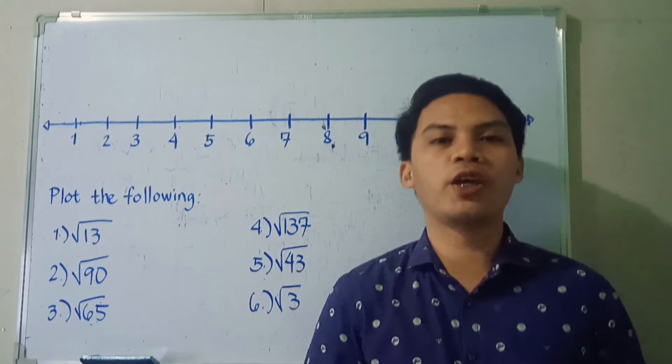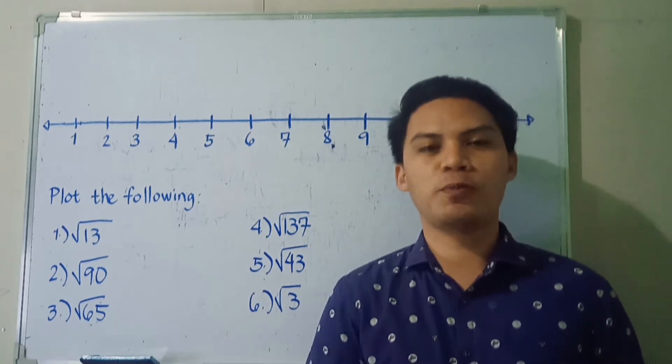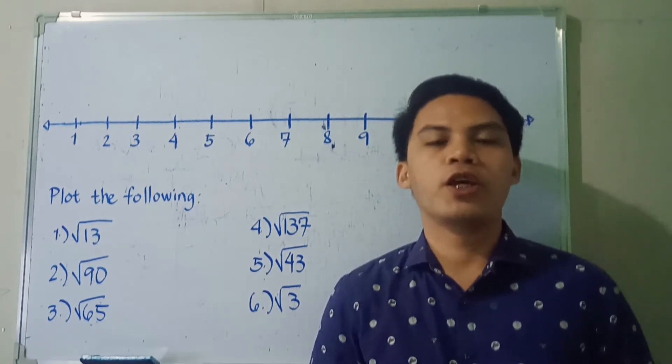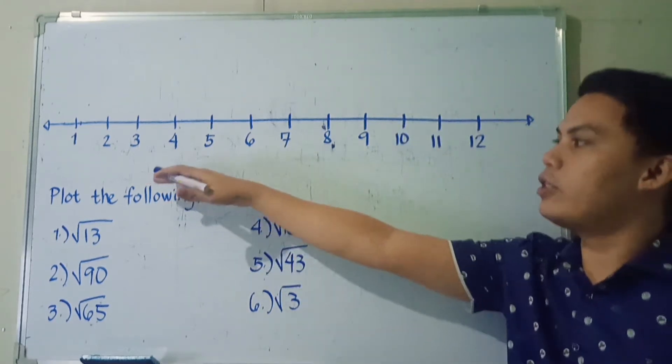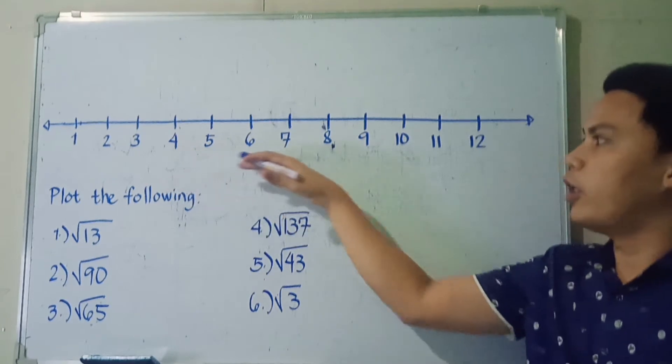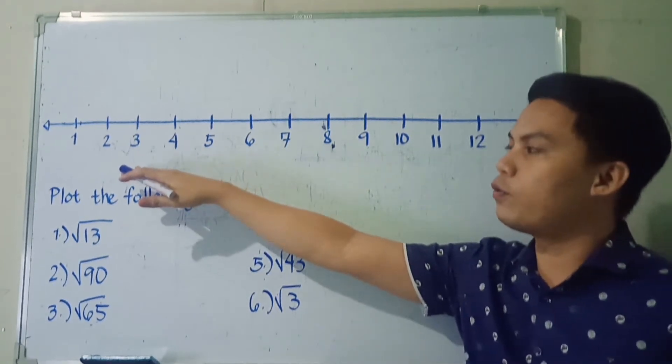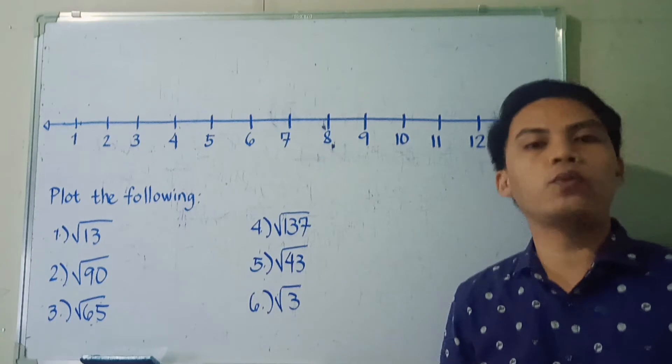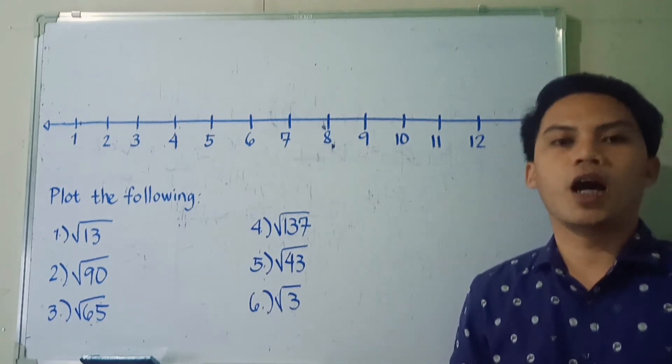Good day learners! Today we are going to discuss how to plot irrational numbers on a number line. So I have here a number line. When we say a number line, it is a horizontal line in which it is composed of units that are equidistant from each other.